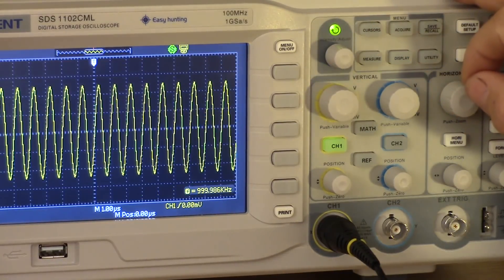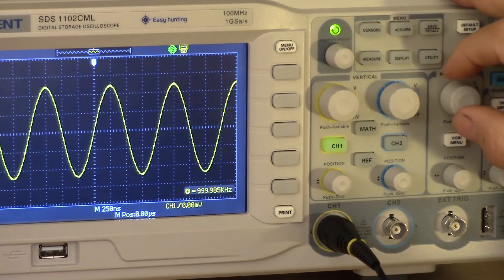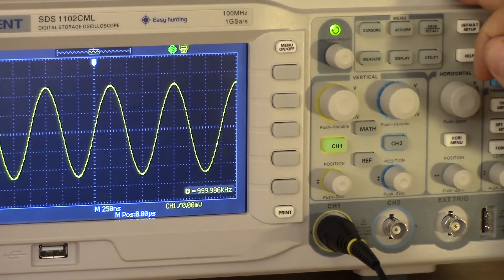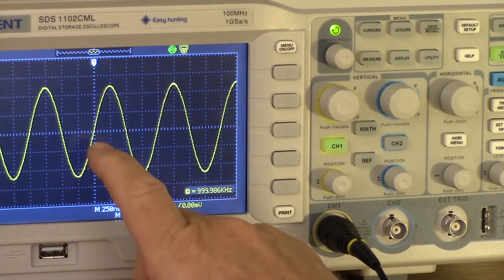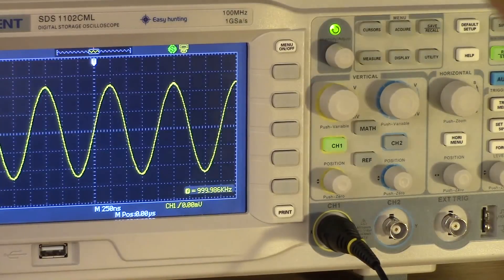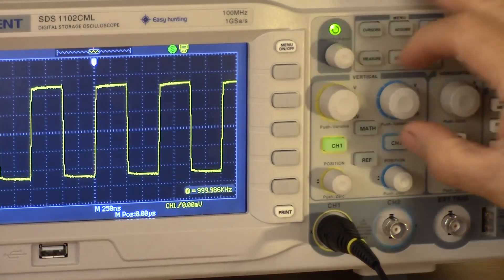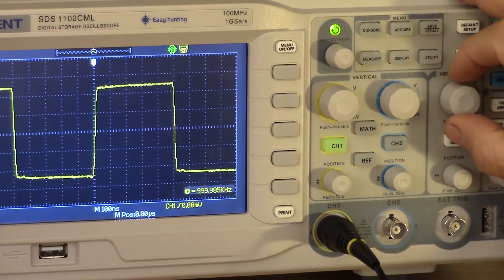Now, I'll point out one of my least favorite features of the scope, if you want to call it a feature. Here, we've got a one megahertz sine wave going in. And as you can see, it's jittering around in the horizontal axis. And it took me a while to figure out what's going on. But it turns out that if we change the input to a square wave, that jitter basically goes away.